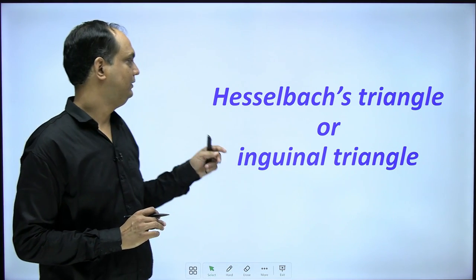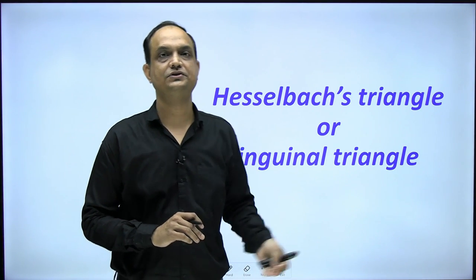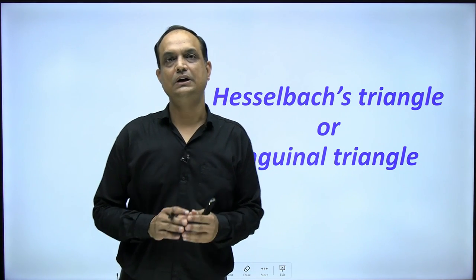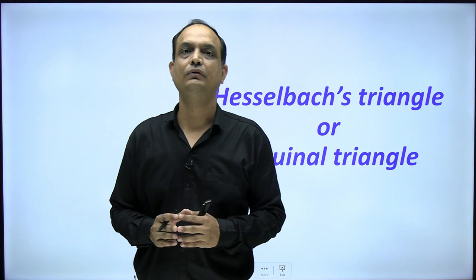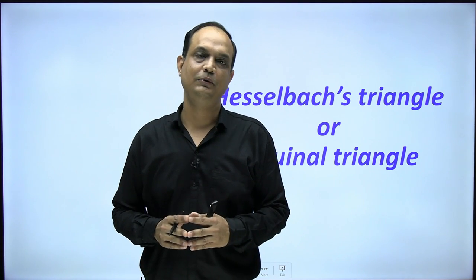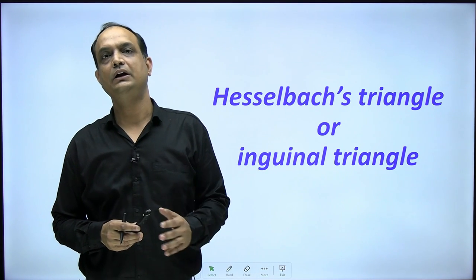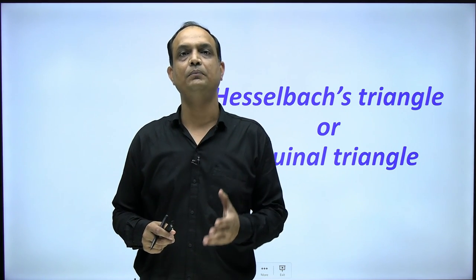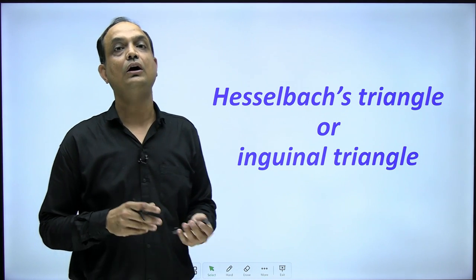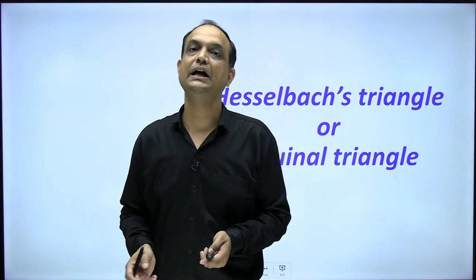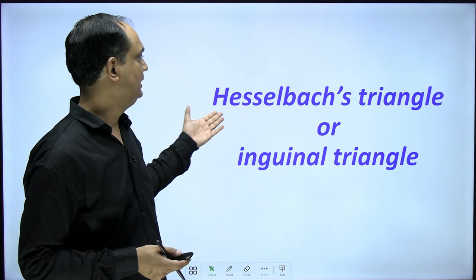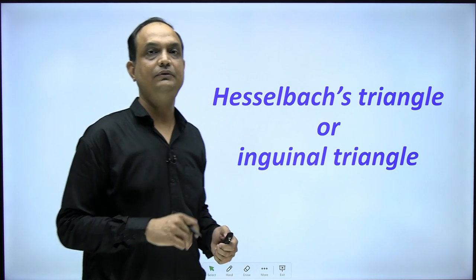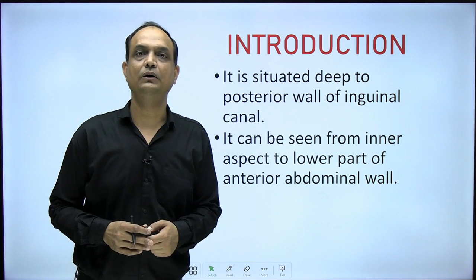Hello students, today we will talk about Hesselbach's triangle, also known as the inguinal triangle. This triangle is part of the lower anterior abdominal wall, so whenever you are reading the inguinal region you come across this term. It is a very important area and landmark when talking about direct and indirect inguinal hernias, as direct inguinal hernias take place through this triangle.